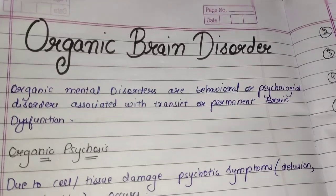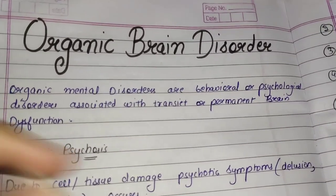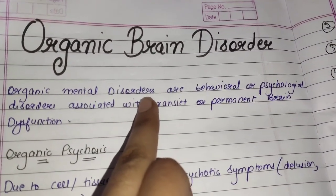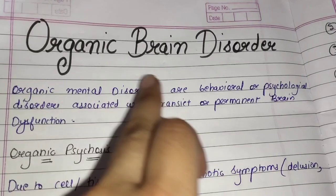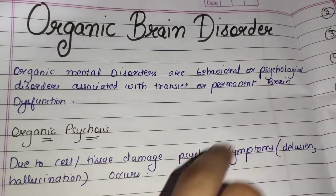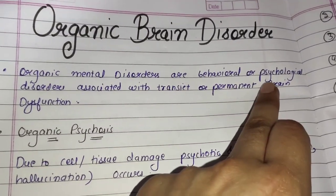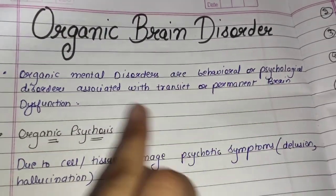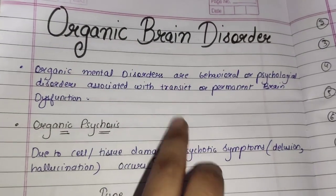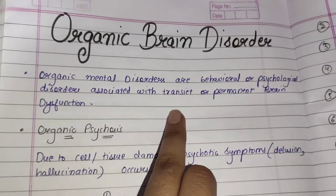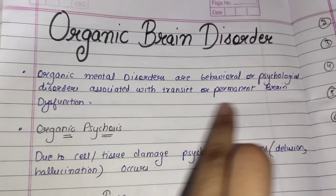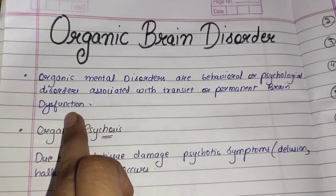So guys, organic mental disorders, which are also called organic brain disorders, are behavioral and psychological disorders. And they are associated with transient or permanent brain dysfunction.